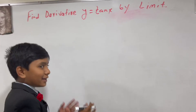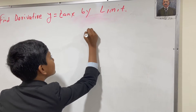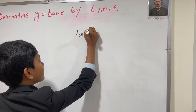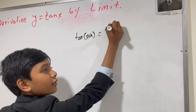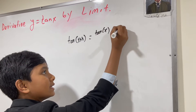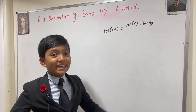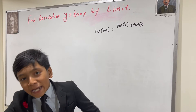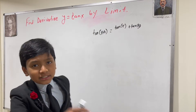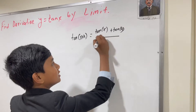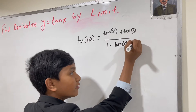Let us start from right over there. Did you know that the tangent of two angles is equal to tangent of the first angle plus tangent of the second angle, all over 1 minus tan of x times tan of h?